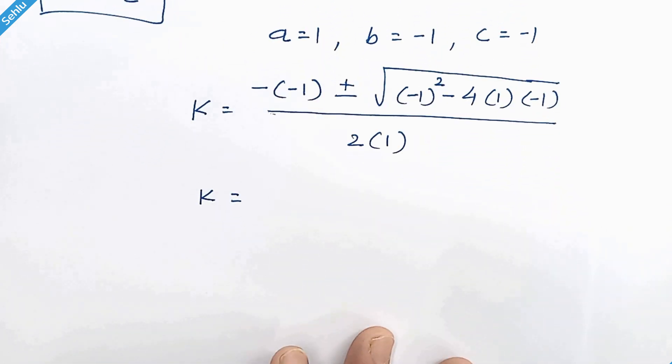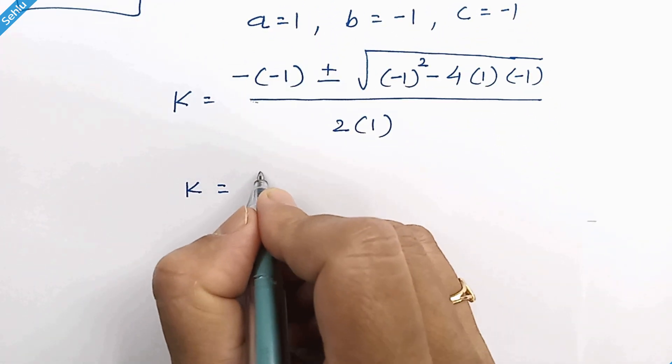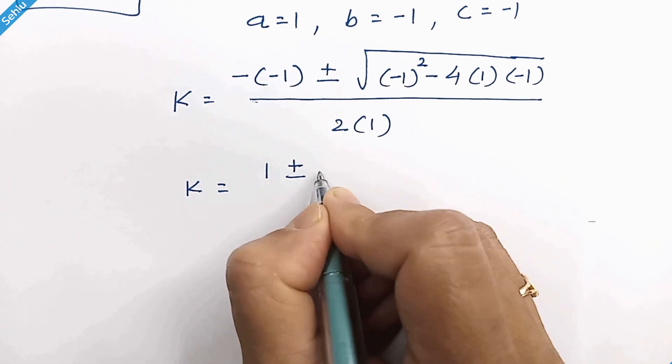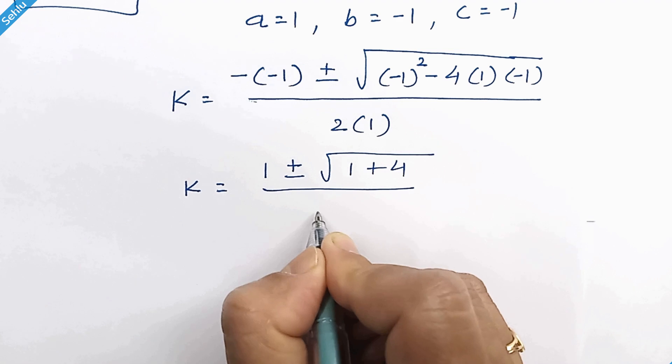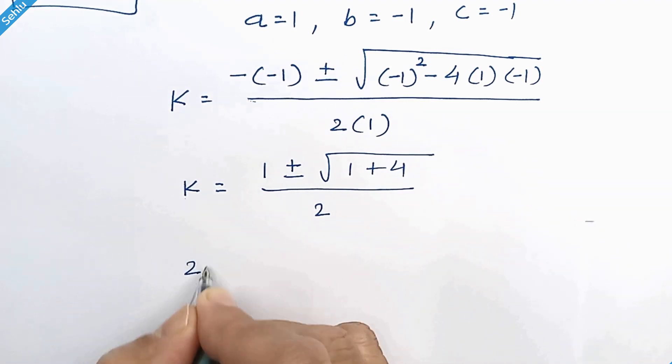So here k is equal to 1 plus or minus square root of 1 plus 4 over 2. k was taken for 2x, so here we have 2x.